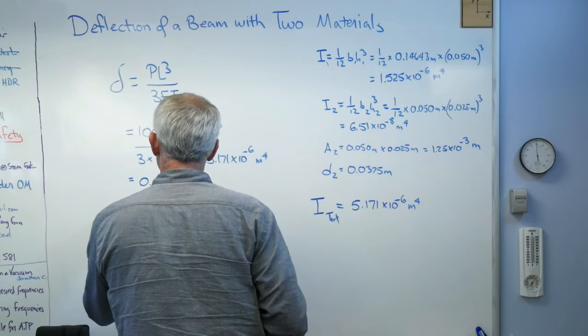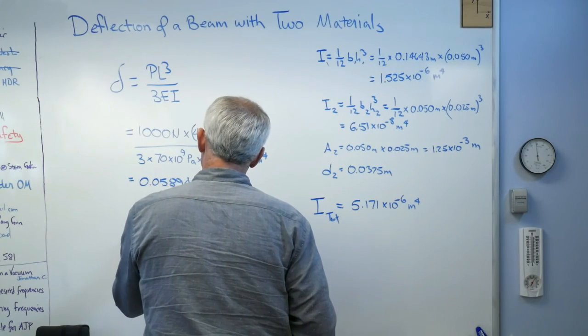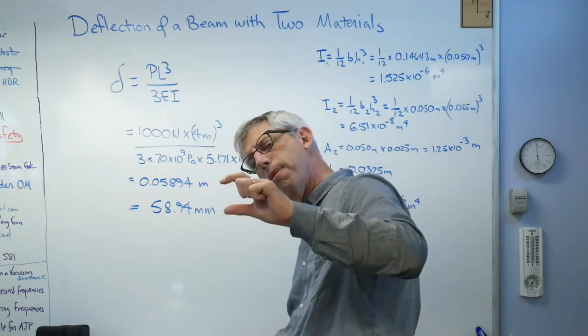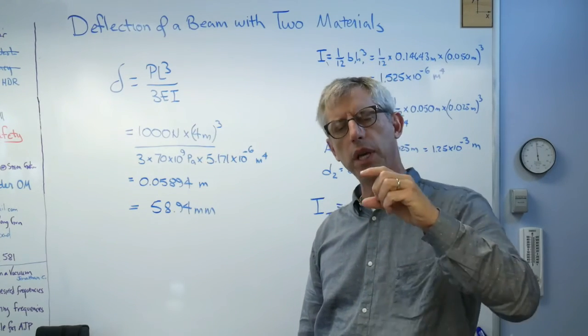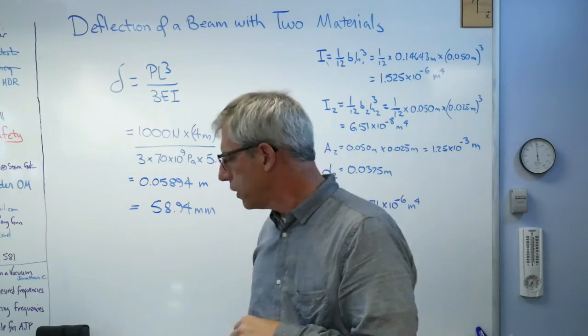So that's 58.94 millimeters. Well, is that a lot or a little? Well, it's about that far. Well, on a four meter beam, if it's only bending about that far, I'm probably okay.